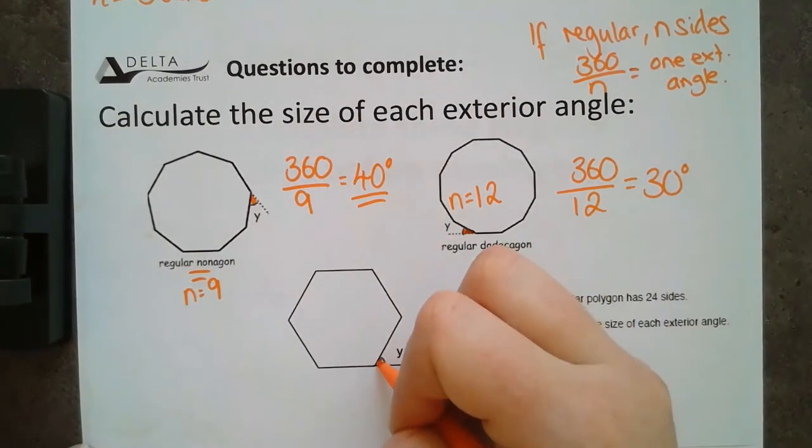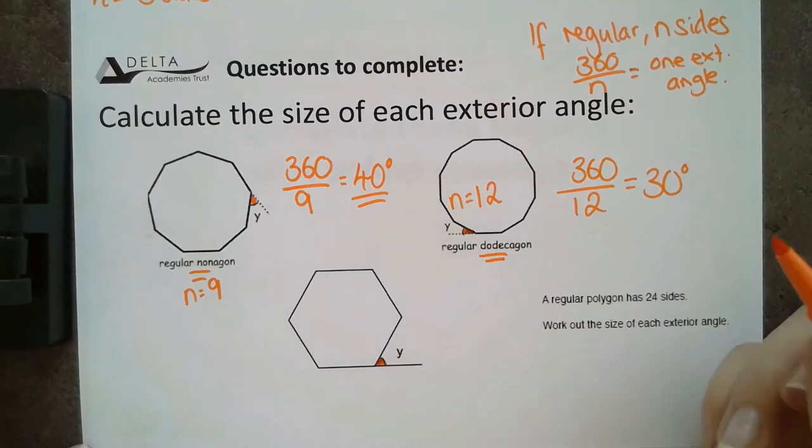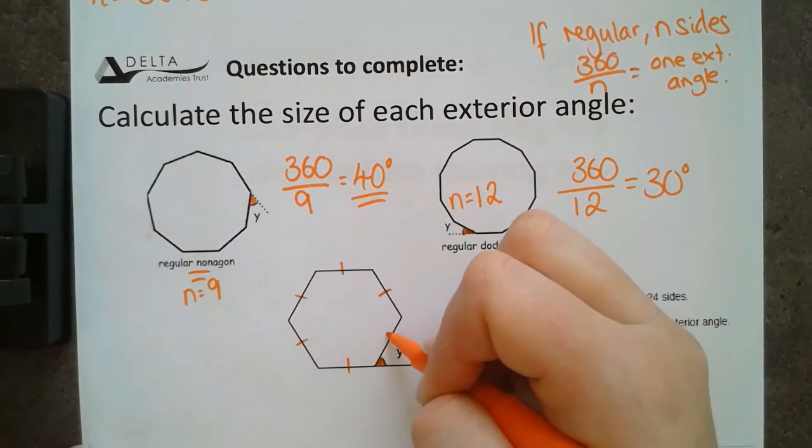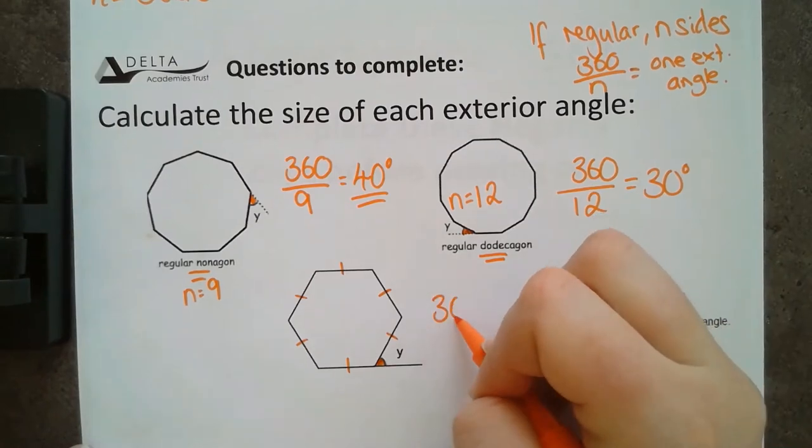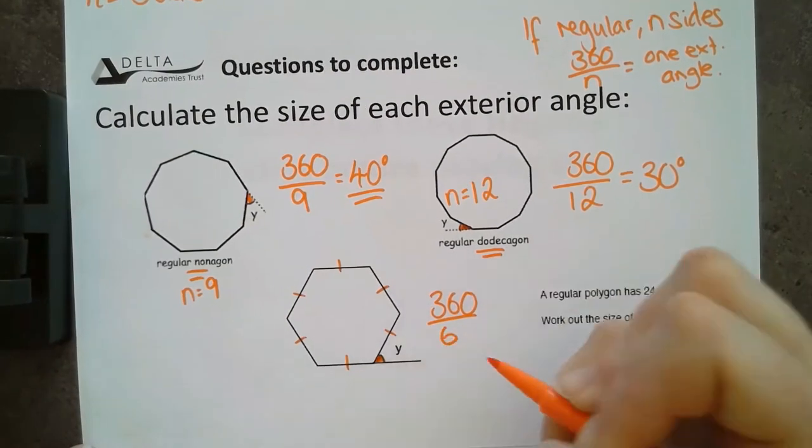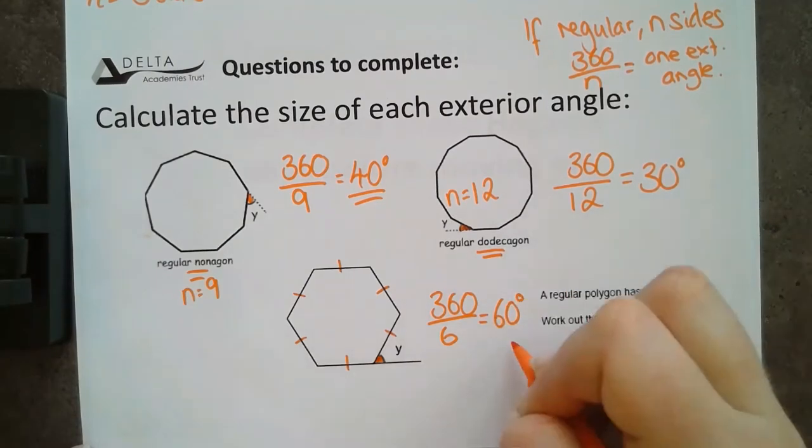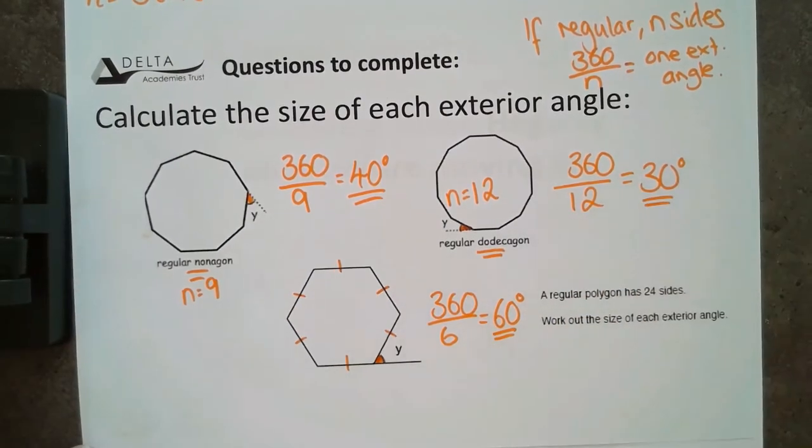We've got another exterior angle here, but this time we're not giving the name of the shape. So, we're going to have to count up the sides. I've got 1, 2, 3, 4, 5, 6 sides. So, 360 divided by 6. That's going to get me 60 degrees on the outside.